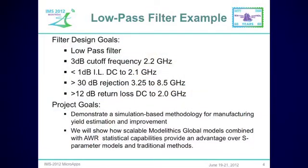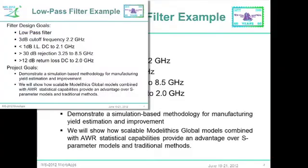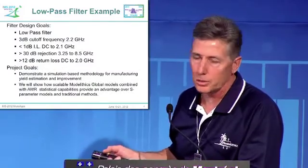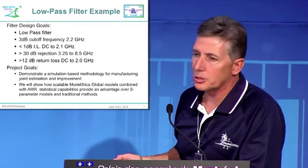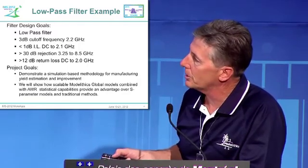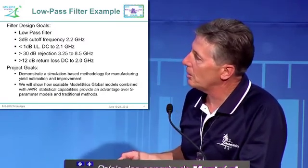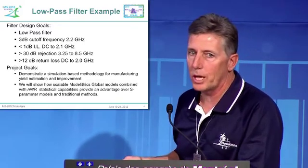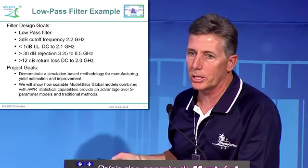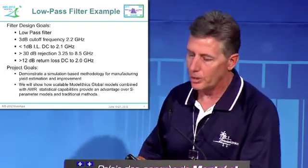For our example today we're using a low-pass filter with the following goals: cutoff frequency of 2.2 GHz, less than 1 dB insertion loss to 2.1 GHz, an out-of-band rejection spec, and a return loss specification. These specifications will later become yield goals in our tolerance analysis. Our goal for this demonstration is to illustrate a simulation-based methodology for yield estimation and improvement, and to show how these scalable models combined with AWR statistical capabilities provide an advantage over alternative S-parameter models.